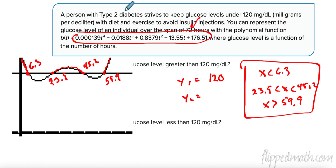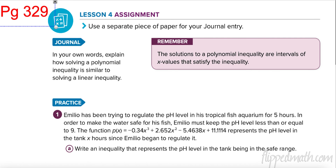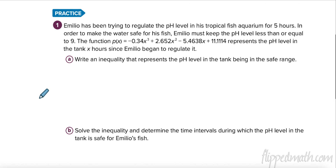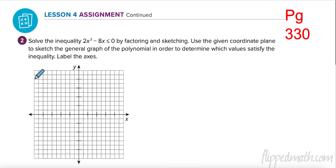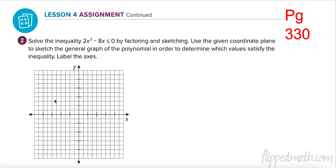The blood sugar is less than 120 — because the inequality says strictly less than, not less than or equal to — from 6.3 to 23.9 and from 45.2 to 59.9. That's using what we have to our advantage. Your homework is on page 329: do all of number one, all of number two, and the stretch problem. You may want to use your calculator, but you can also sketch it. Best of luck — make sure you ask questions!